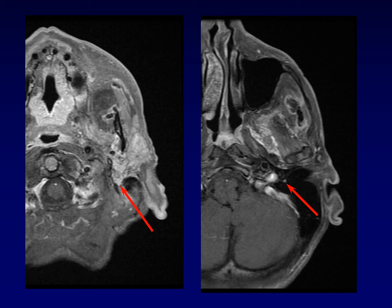Here is a more classic form of tumor spread from a parotid adenoid cystic carcinoma. You can see that the stylomastoid foramen is completely filled with tumor. And as you look more superiorly, there's abnormal enhancement of the vertical segment of the facial nerve. This is the classic form of perineural spread for a parotid tumor — again, adenoid cystic carcinoma.